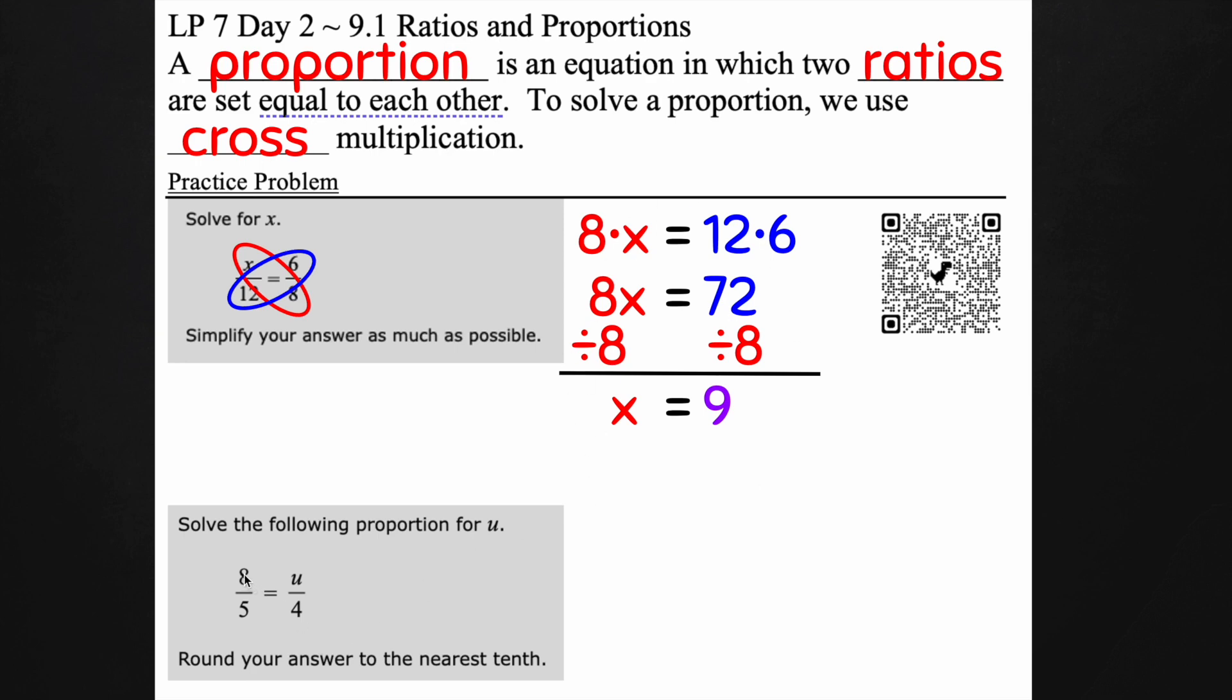Let's try one more. So 8 and 4 that's our first multiplication. 8 times 4 and then we have 5 times u for our second cross multiplication. Again they equal each other. The equal sign does not just disappear.